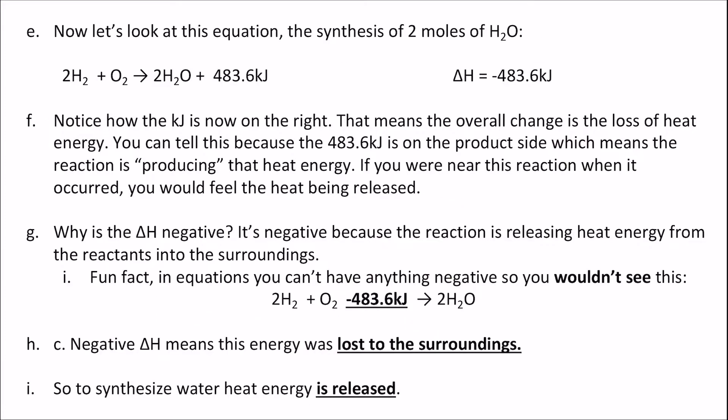Now let's look at this equation, which looks very similar, but it's actually the opposite of what we just saw. Here we're taking hydrogen gas and oxygen gas, and we're combining them to make water. Notice how the kilojoules is now on the right. That means the overall change is the loss of heat energy. You can tell this because the 483.6 kilojoules is on the product side, which means the reaction is producing heat energy. If you were near this reaction when it occurred, you would feel heat being released.